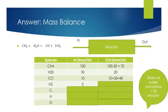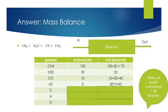We had no hydrogen coming in. For every one mole of water used up, we must have made 3 moles of hydrogen. That means 3 times 30, or 90 kilomoles per hour of hydrogen, is flowing out of the reactor.